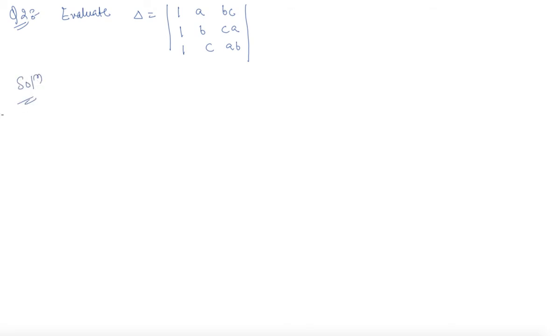How to proceed with these type of questions? We will use some properties here. What I will do is I will apply an operation on R2 where R2 goes to R2 minus R1, so this element will become zero. Same operation on R3: R3 goes to R3 minus R1.